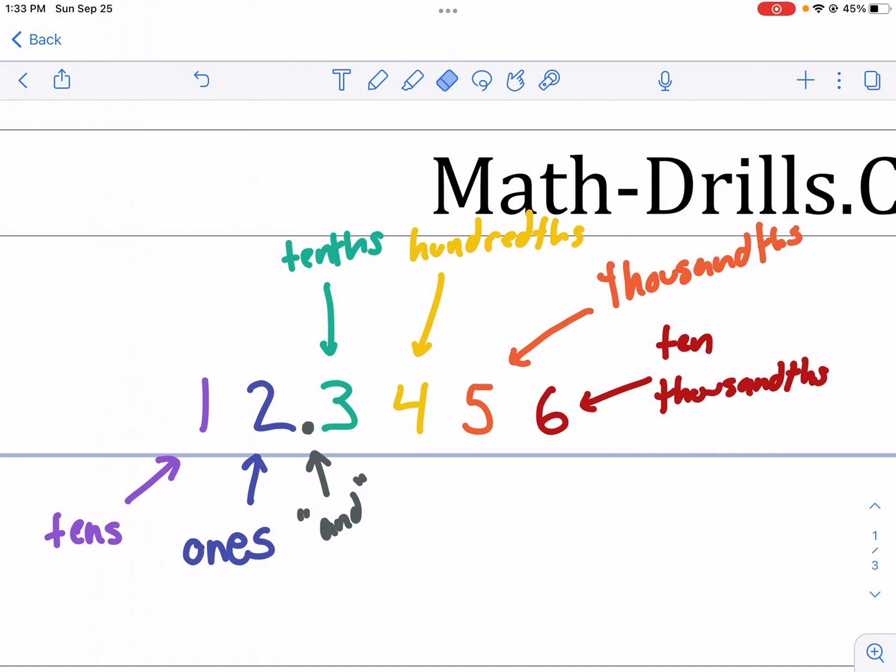So you already knew that but to the right of it you'll notice that there's no ones. It starts with the tenths place. So we have tens to the left of the ones place and then to the right of the decimal, there's the decimal, we have the tenths place. Notice how all these have THS at the end of it. So how does it go? It goes tenths place, hundredths place, thousandths place and then ten thousandths place.